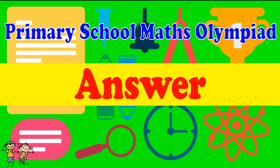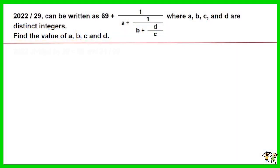Here is the recommended answer. 2022 divided by 29 equals 69 and 21 over 29.